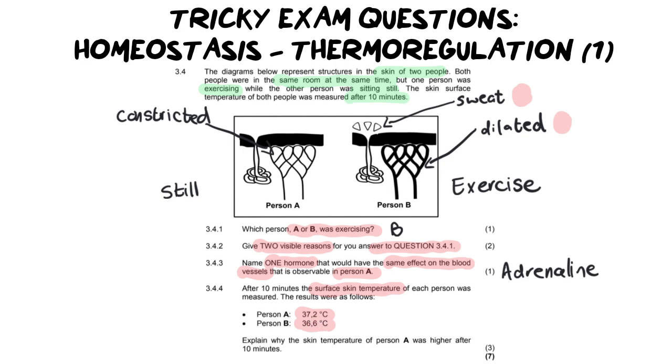Now I know you're looking at that and thinking but wasn't person B the one who was exercising? Yes they were but remember the whole point of thermoregulation is to regulate your body temperature. So if you are hotter because you're exercising then naturally your body will start to cool itself down right? That's the point of thermoregulation. So these results are not incorrect but they are there to trick you because let's read on further.